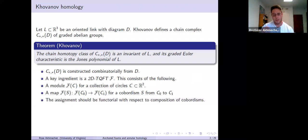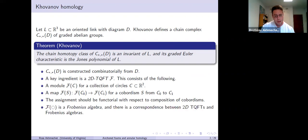Moreover, this assignment is functorial with respect to composition of cobordisms. You can think of this as a functor from the cobordism category into a module category. And in particular, if you apply it to a single circle, it has this extra algebraic structure — it's what's called a Frobenius algebra. Moreover, there's a correspondence between two-dimensional TQFTs and Frobenius algebras, so we kind of use them interchangeably.